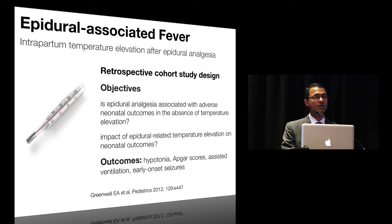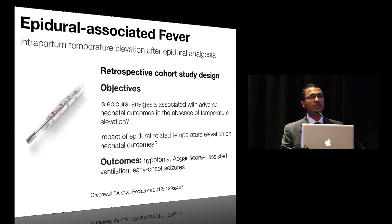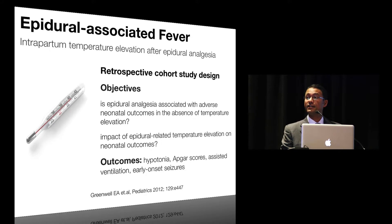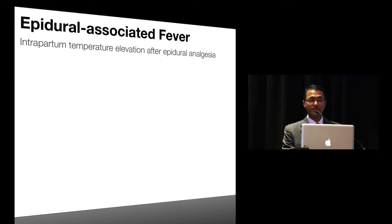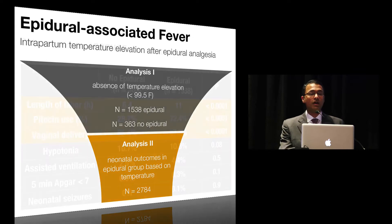The first study I'm going to highlight, which received a lot of publicity, is by Dr. Lieberman's group, looking at intrapartum temperature elevation after epidural analgesia. This was a retrospective cohort study including all infants born in the year 2000. The study asked two questions: is epidural analgesia associated with adverse neonatal outcomes in the absence of temperature elevation? And what is the impact of epidural-related temperature elevation on neonatal outcomes? Outcomes specifically looked for were hypotonia, low APGAR scores, the need for assisted ventilation, and early onset seizures. The authors did two separate analyses — including all patients without a rise in maternal temperature for the first question, and dividing the epidural group by categories of temperature rise for the second.